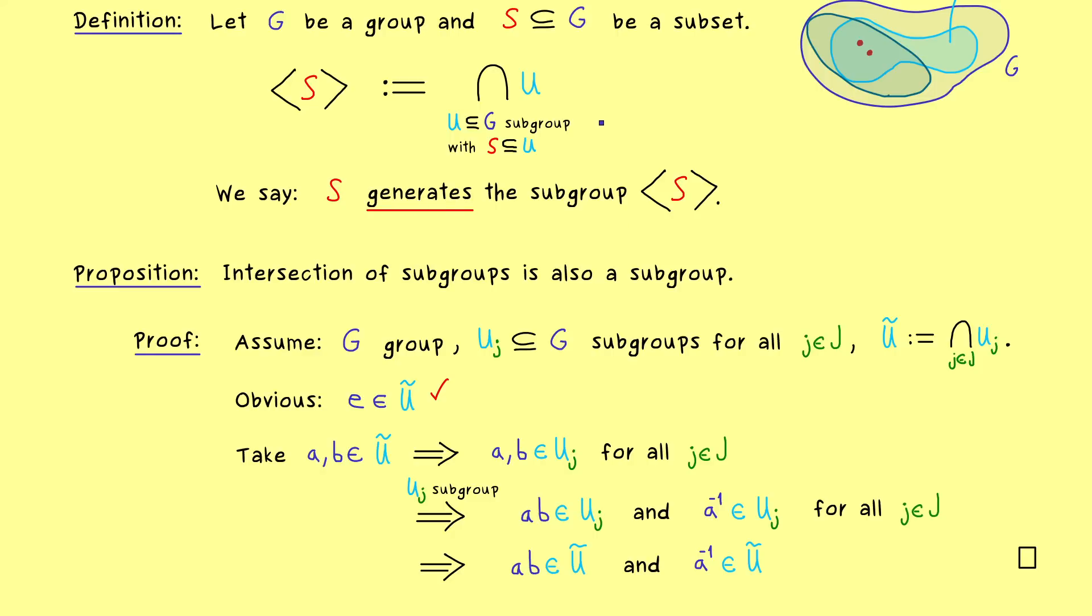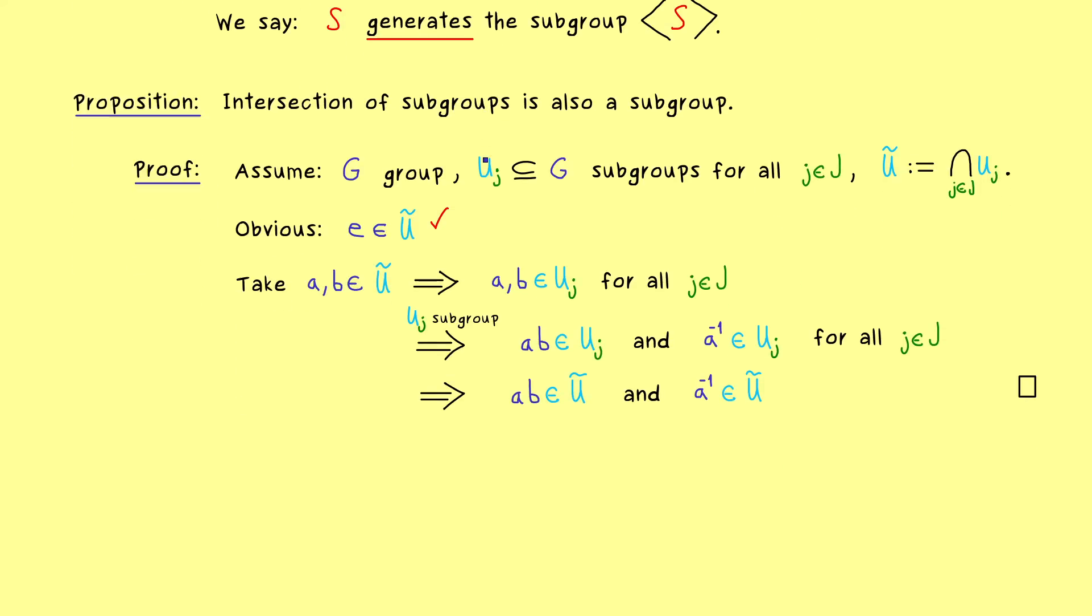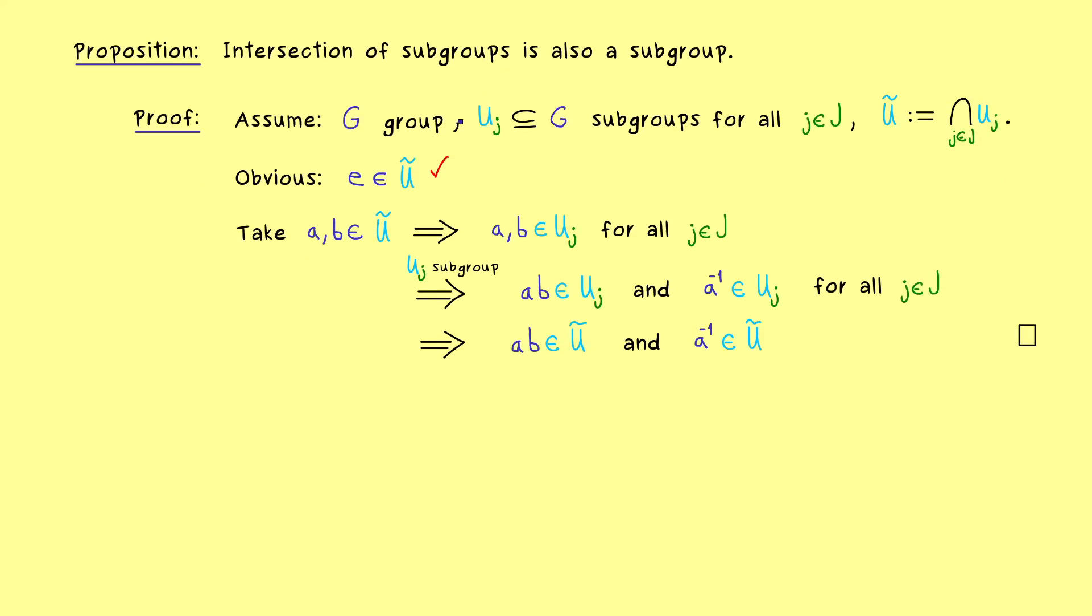Indeed, in practice you would not just collect all possible subgroups and then form the intersection, because this is not very efficient. So let's talk about something we could take as an equivalent definition.